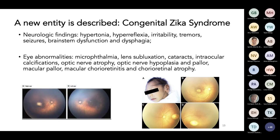At that point, a new entity was described: congenital Zika syndrome. These babies showed many neurological findings — hypertonia, hyperreflexia, extreme irritability, tremors, seizures, brainstem dysfunction, and dysphagia. It's a spectrum of how much the central nervous system is affected and you can have really tragic manifestations. There were also many eye abnormalities — microphthalmia, lens subluxation, cataracts, intraocular calcifications, and different abnormalities of the optic nerve. So many cases were described that this syndrome was formally defined.